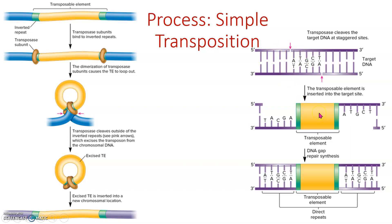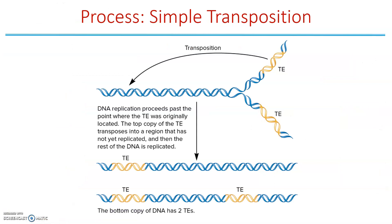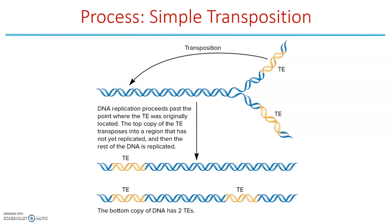Simple transposition can also increase copy number because this process often occurs around DNA replication. The transposable element is replicated as part of the genome, but if it excises and inserts into a region that hasn't yet been replicated, it will be replicated again. So one chromosome ends up with one copy and another ends up with two — ultimately producing more copies than we started with.